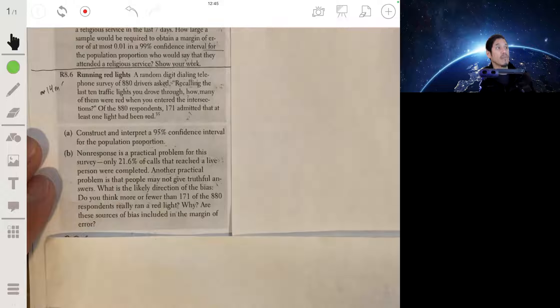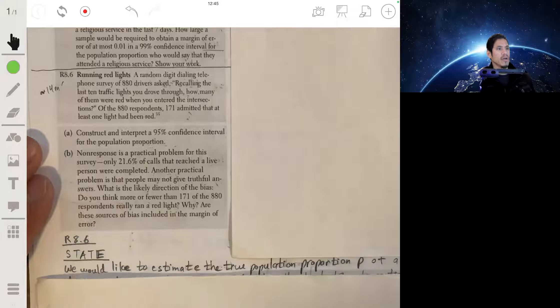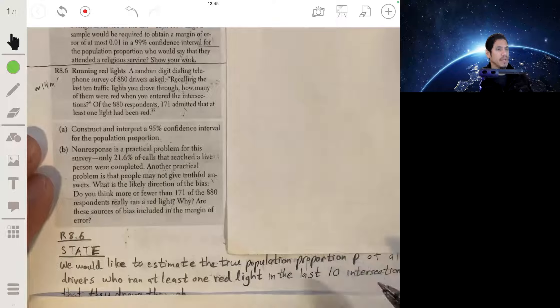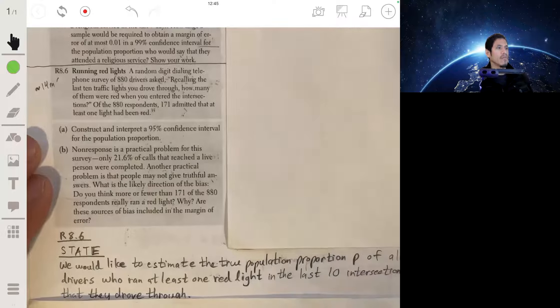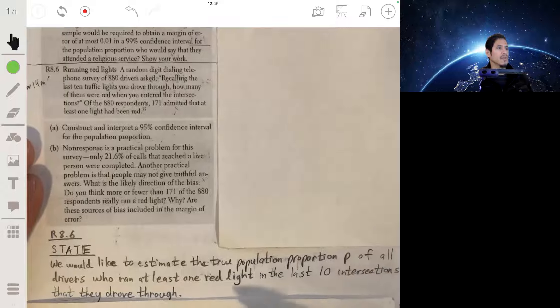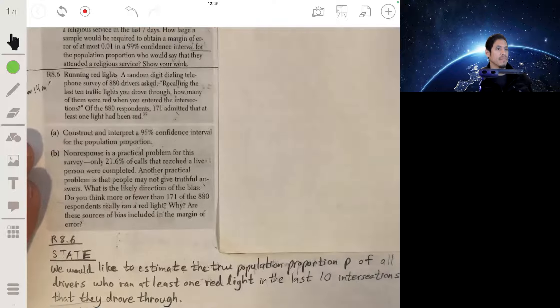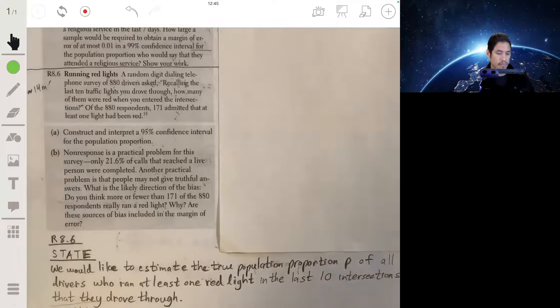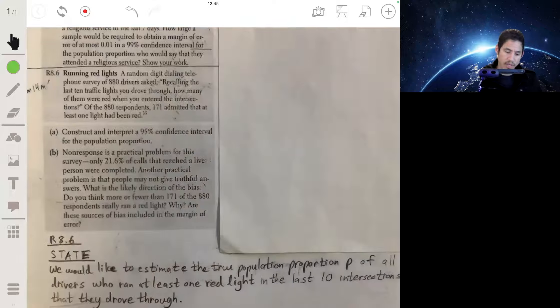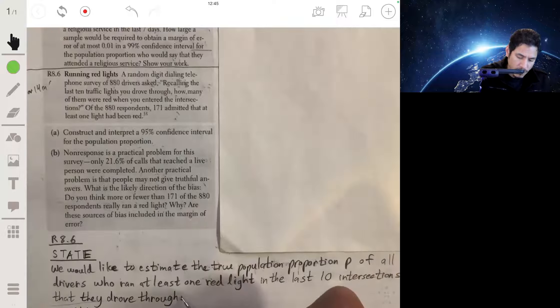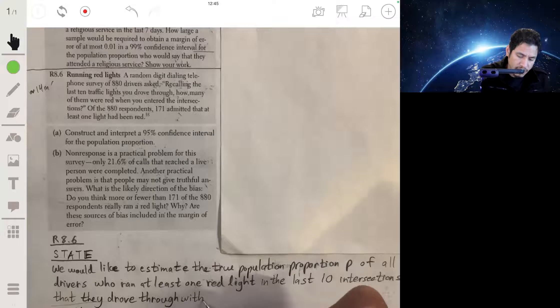So first we're going to state what we're trying to figure out in terms of our parameter and our confidence level. We are trying to estimate the true proportion p of all the drivers who ran at least one red light in the last 10 intersections that they drove through, with 95% confidence.